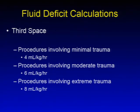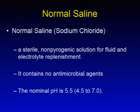For third space losses, if the procedure involves very minimal trauma, use 4 mL per kilogram per hour. If it involves moderate trauma to tissues, use 6 mL per kilogram per hour. For procedures involving extreme trauma, use upwards of 8 mL per kilogram per hour to replace those third space losses.